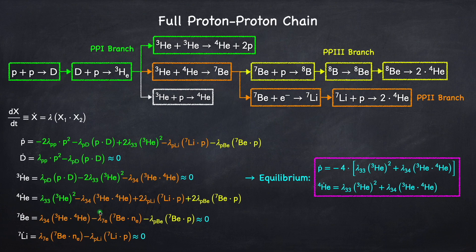As you can see this is a pretty complicated set of differential equations, but we were able to simplify it by assuming that all of the intermediary species between hydrogen and helium were in what's called statistical equilibrium. And all it means is that the rate of change of the number of species is zero — the rate at which a nuclear species is being created is equal to the rate at which it's being destroyed. When we did this, this set of equations simplified to a set of two differential equations, which is actually solvable analytically.